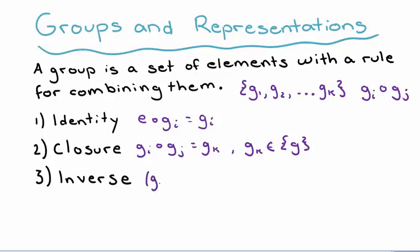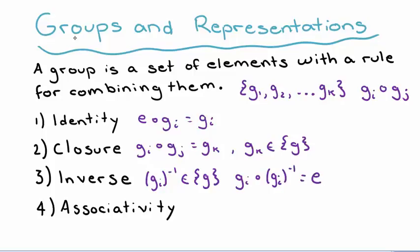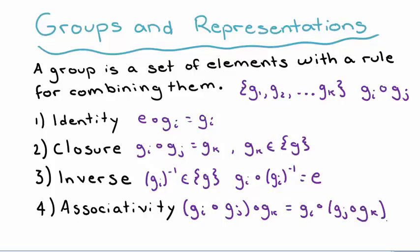The next requirement is inverse. Inverse demands that for any element in the group, there must be some element that also exists in the group that is considered that element's inverse, such that an element combined with its inverse gets back the identity. The final requirement is associativity. Associativity requires that the rule for combining elements of a group is associative — in other words, Gi combined with Gj combined with Gk equals the same result regardless of where the parentheses are placed.